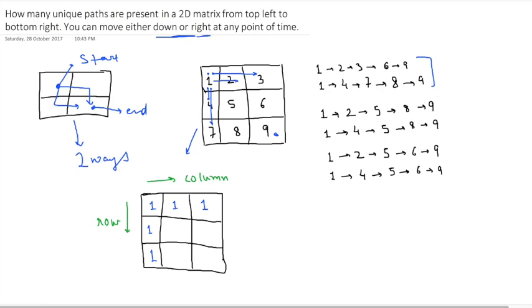So if I am standing at this particular position, that is second column and second row, so what are the total paths that I can follow to reach here? So the rule is like either I can move down or I can move right.